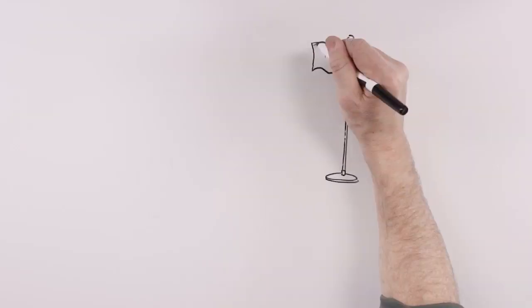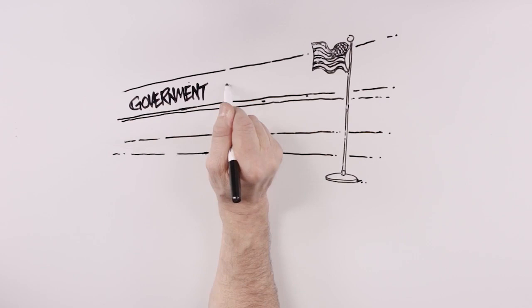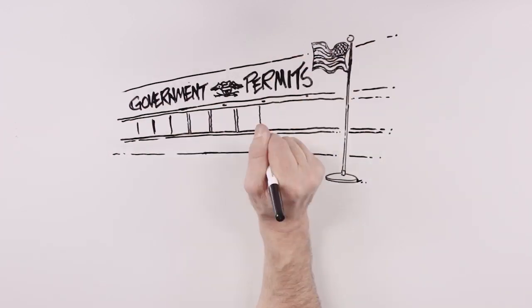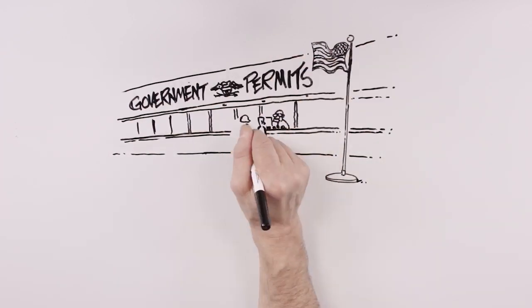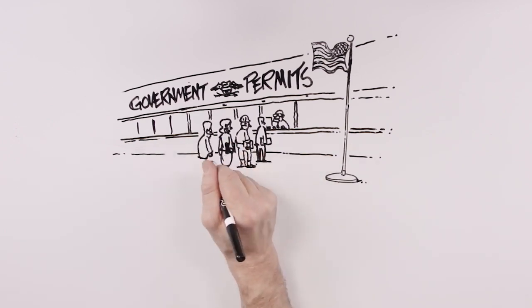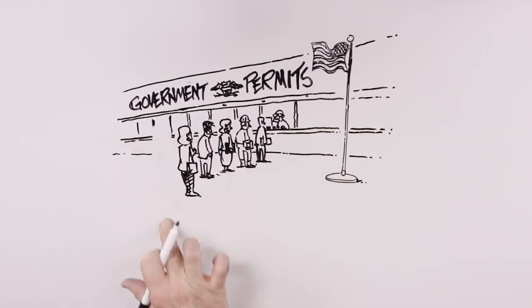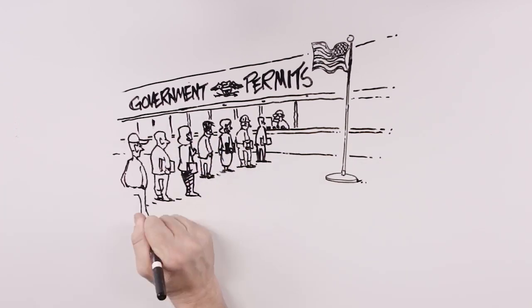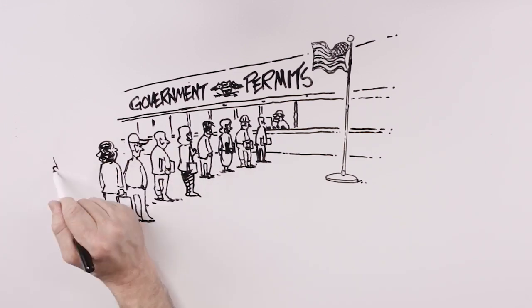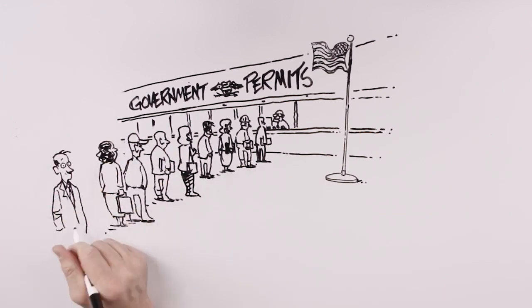Current government policies are impeding the production and use of domestically mined minerals. Why are American manufacturers importing more than half of the minerals that they need? As it turns out, the number one reason is it takes too long to get a permit from the government to open a mine.